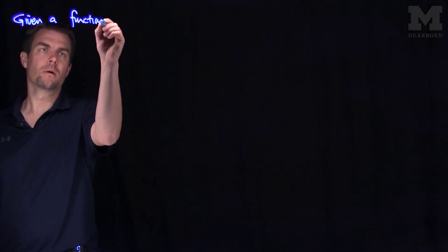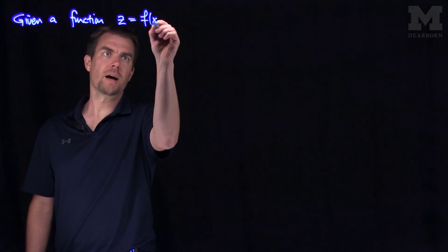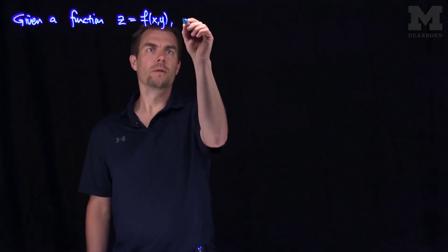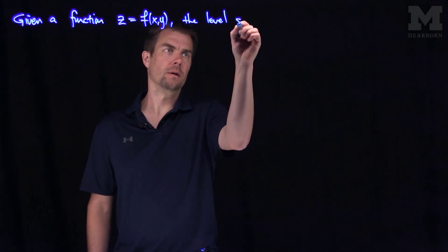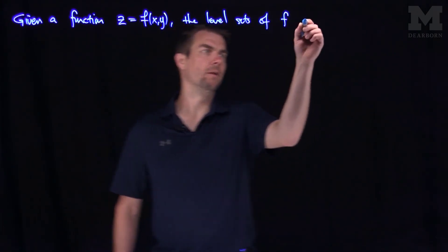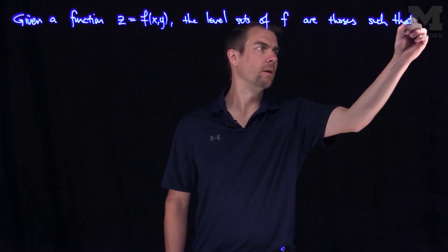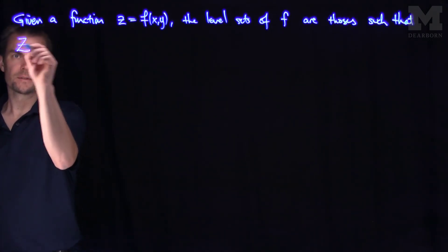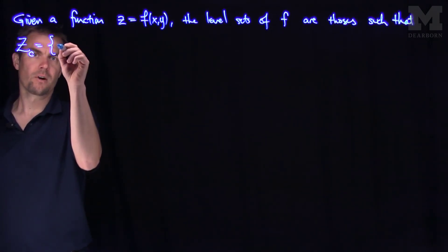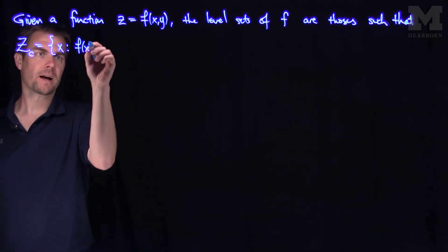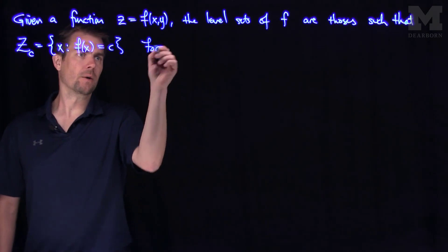Hello students. In this video we'll discuss level sets of functions of several variables, or level surfaces, based on the dimension. So if we're given a function z equals f, the level sets of f are those such that we look at z, which is the set of all points x, such that f is equal to c for a real number c.